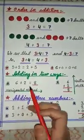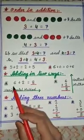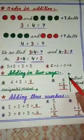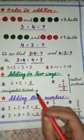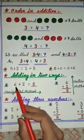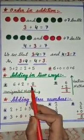Now children, see this. Adding in two ways. We can place the numbers this way and this way in both the ways. The first way is horizontal method. This is horizontal method where we place the numbers in a horizontal way.